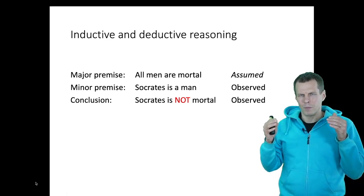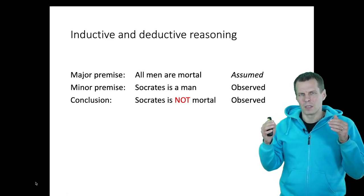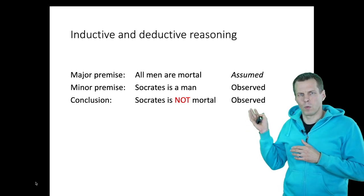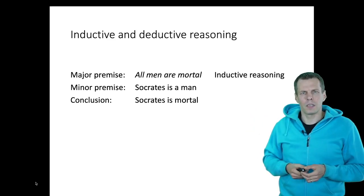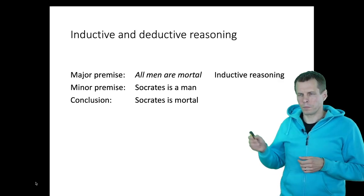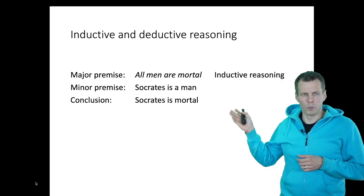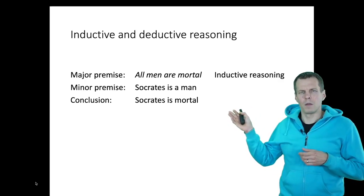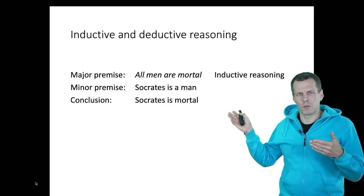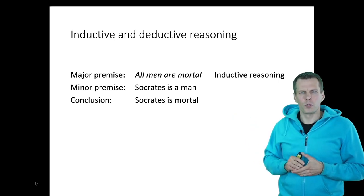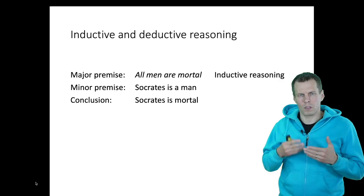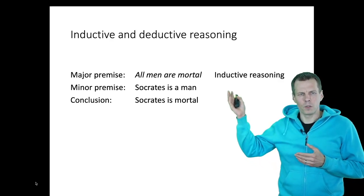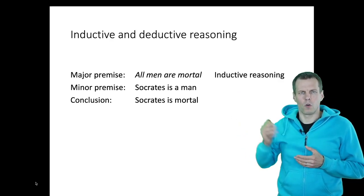In deductive reasoning, we start with the major premise and minor premise and infer what we should observe. Inductive reasoning is different. We observe the minor premise and the conclusion, and then infer the major premise. So if we observe that Socrates is a man and that Socrates is mortal, we infer the rule that all men are mortal.